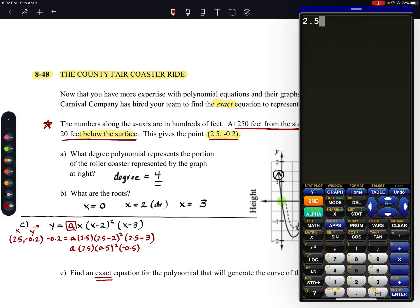So you'd say 2.5 times 0.5 squared times negative 0.5. And you'll see we get negative 0.3125 times a. And that should equal negative 0.2. So we're just going to divide each side by negative 0.3125. That should tell us what our value of a is going to be.